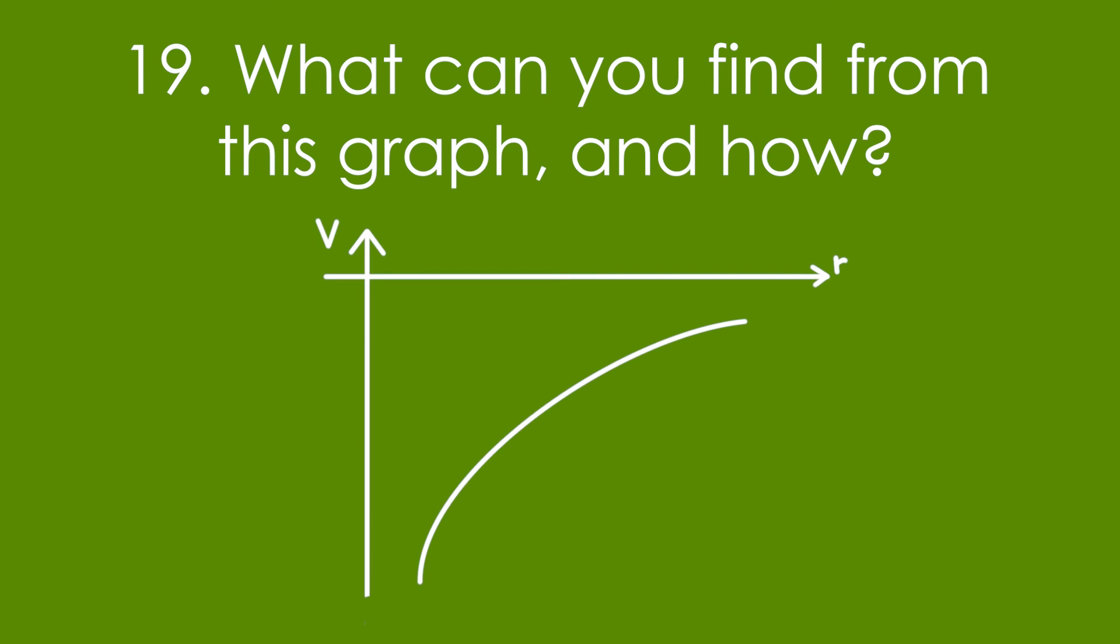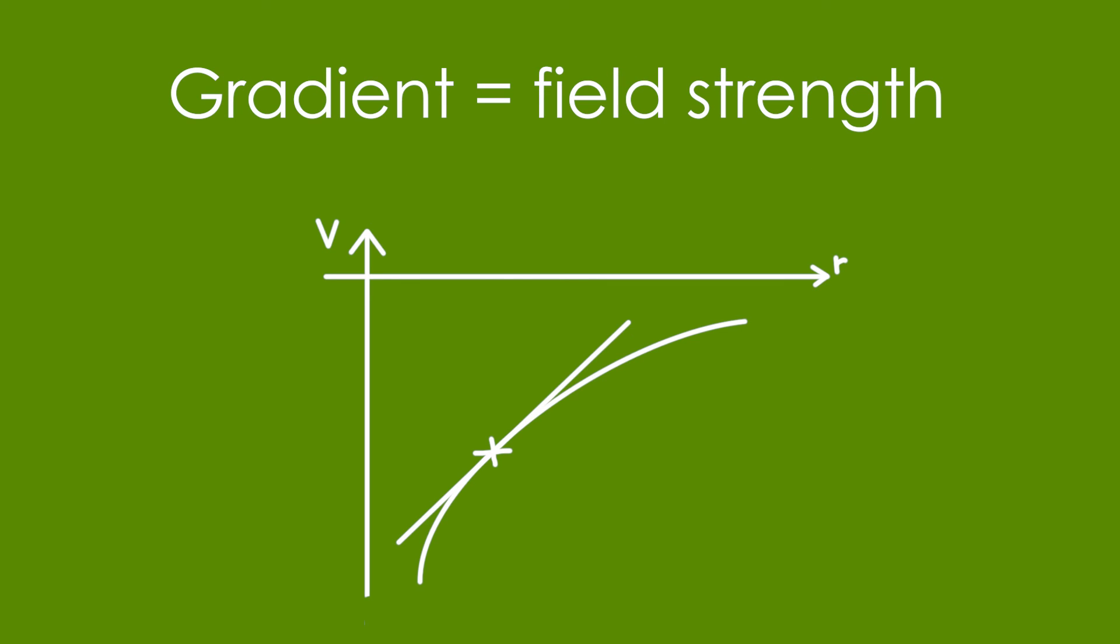Nineteen, what can you find from this graph of potential against distance and how? You can find the field strength at any point by just calculating the gradient.